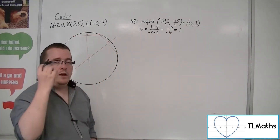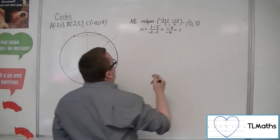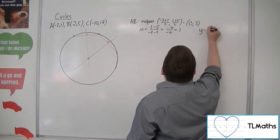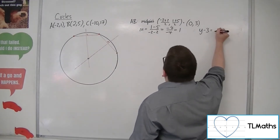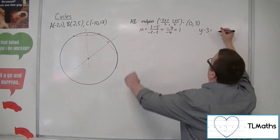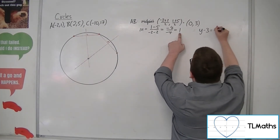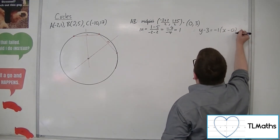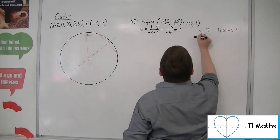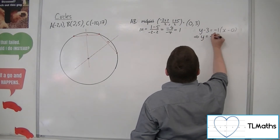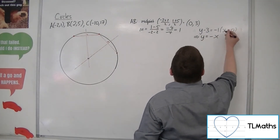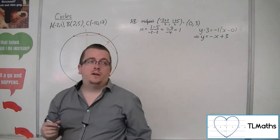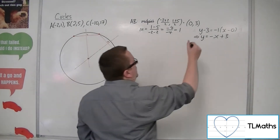So the equation of the perpendicular bisector will be y minus 3 equals m — the negative reciprocal of 1, which is minus 1 — times x take away 0. So therefore y equals minus x plus 3. That's the equation of the first perpendicular bisector.